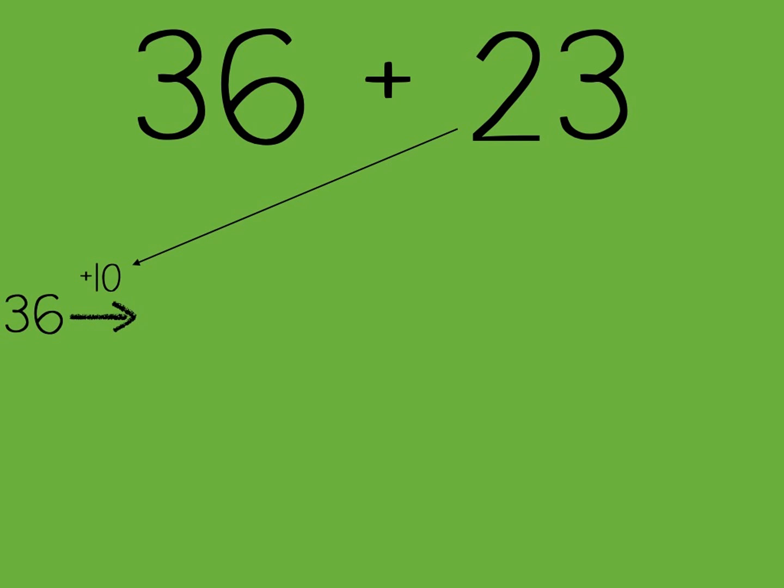On the first 10, 36 plus 10. If you remember the last video we did, then you'll remember that if you're adding a 10, the only digit that changes would be the tens place. This would become 46. We still need to add the other 10 to make 20. So here we go, now we're adding the next 10 to 46. Again, you're adding 10, the tens place is the only place that will change. So 46 becomes 56.